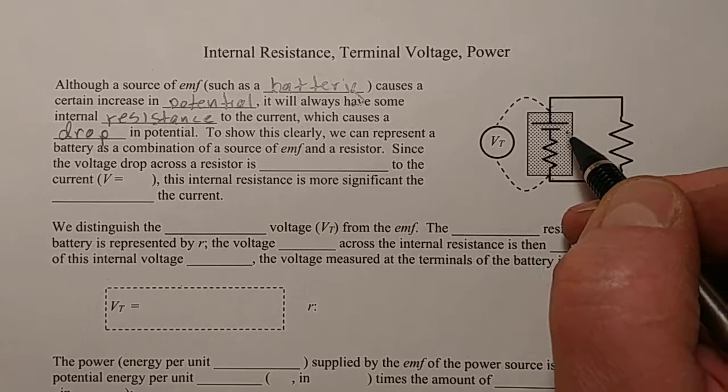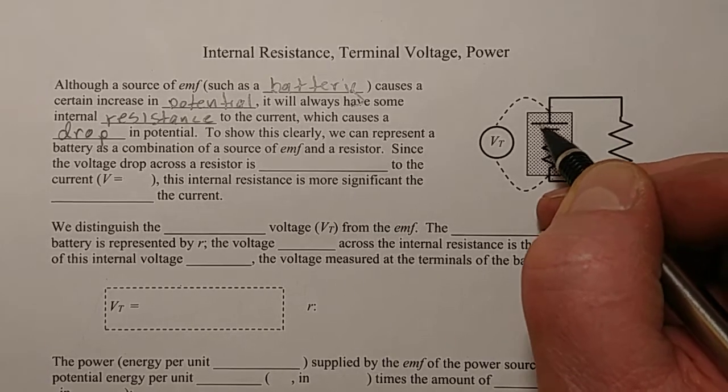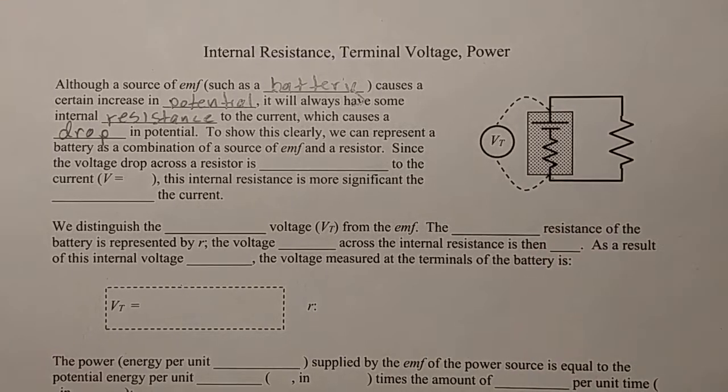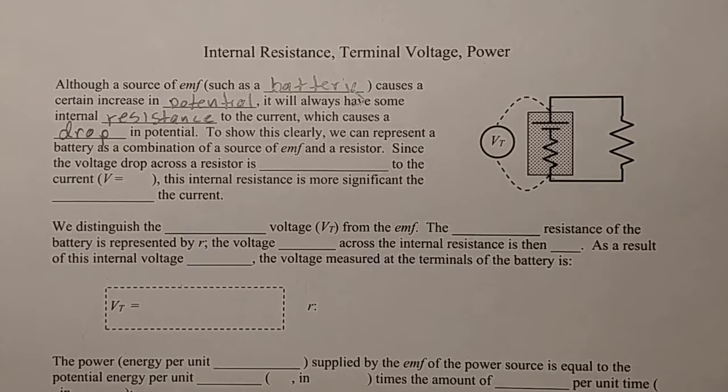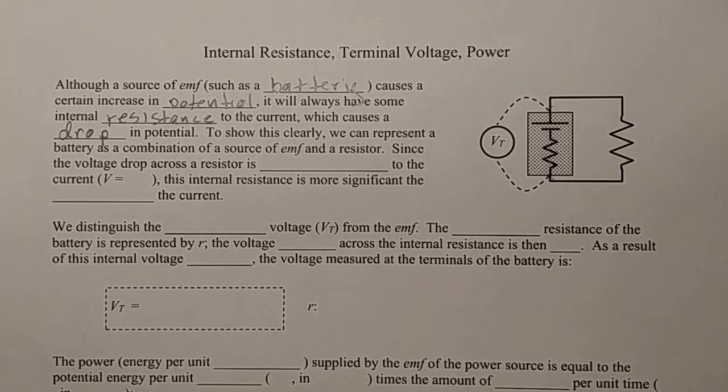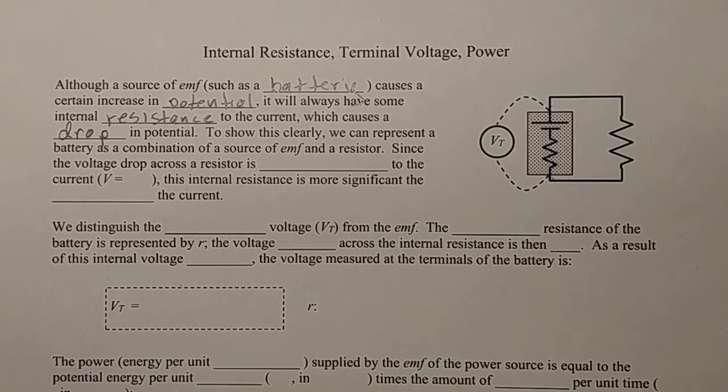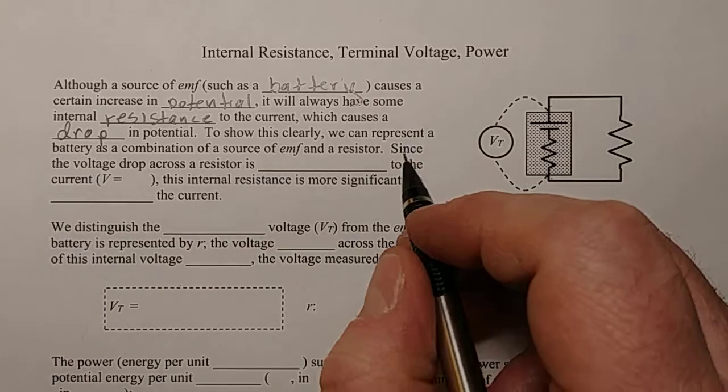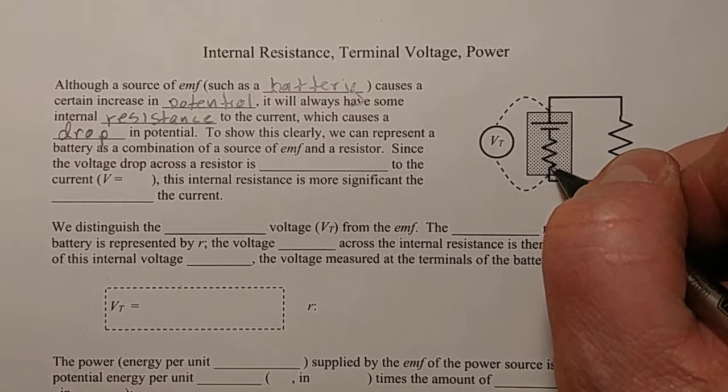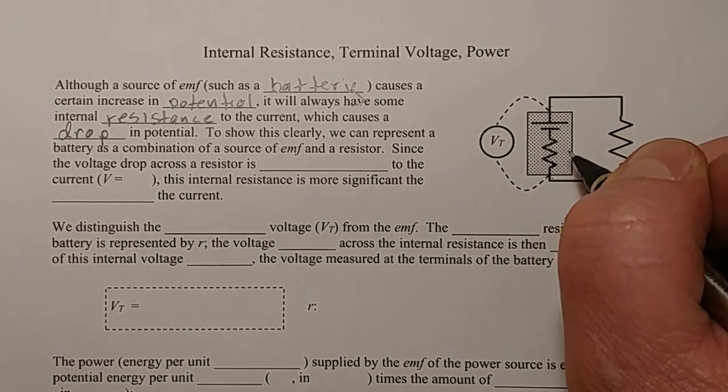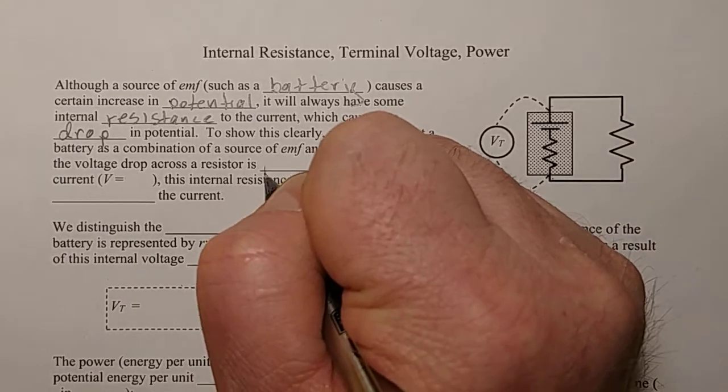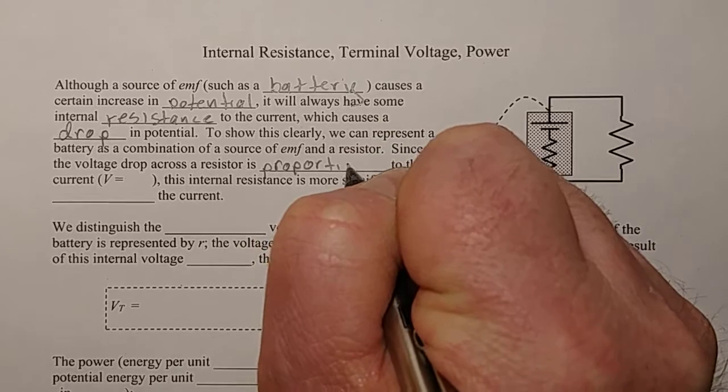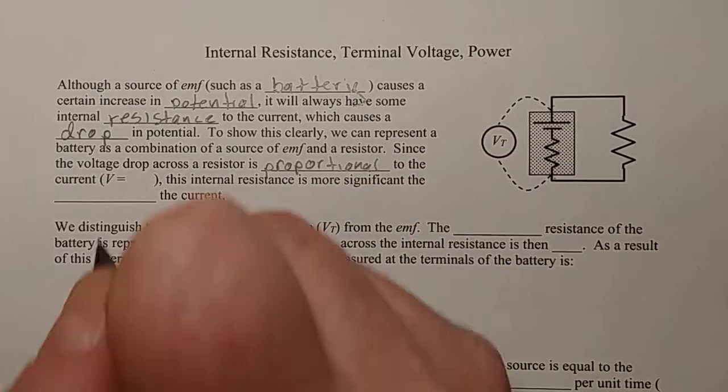And so the way we imagine that, the way we create a model that makes sense is we kind of separate the fact that there's an EMF caused by a chemical reaction and there's an internal resistance caused by the fact that the battery itself has some resistance to the current flowing through it. We know that the voltage drop across the resistor for this resistor here, this is where we're going to lose some voltage inside the battery. There's this EMF and then there's a voltage drop here. Well, that voltage drop is proportional to the current because V equals IR.